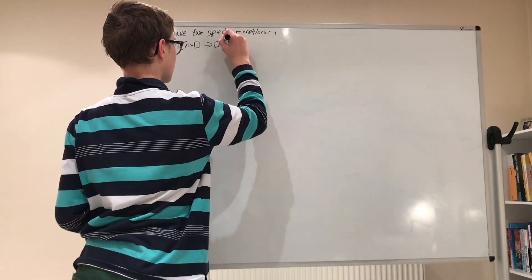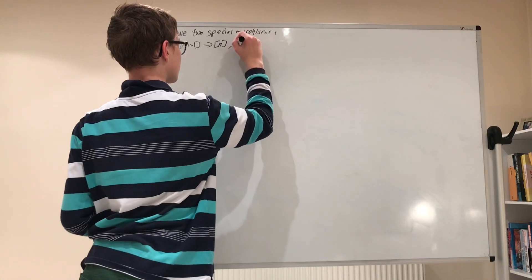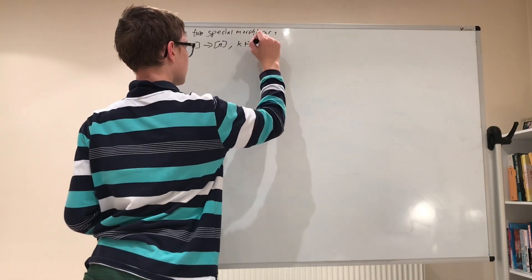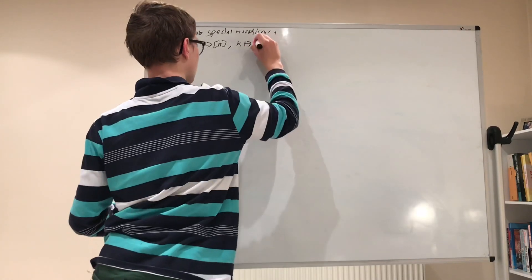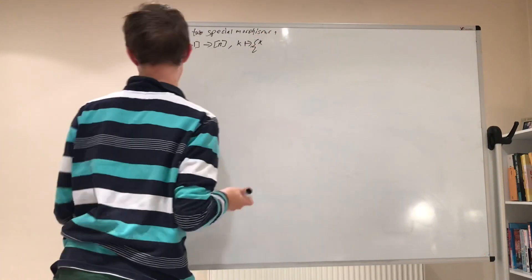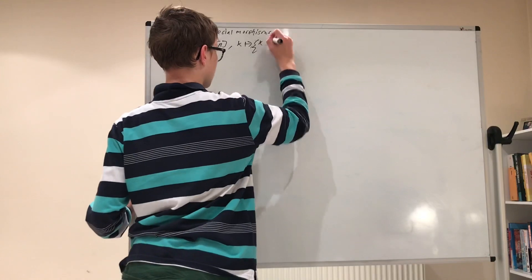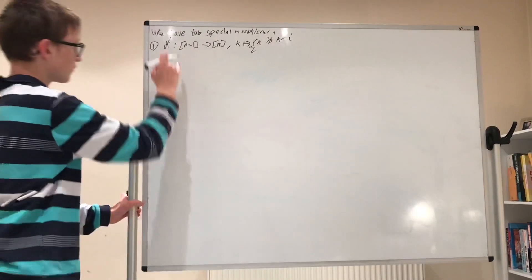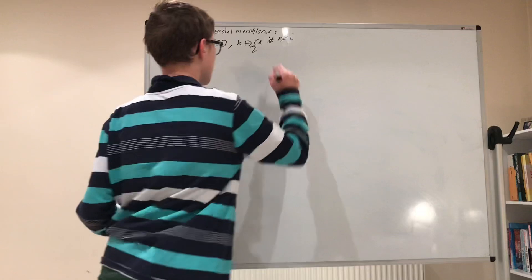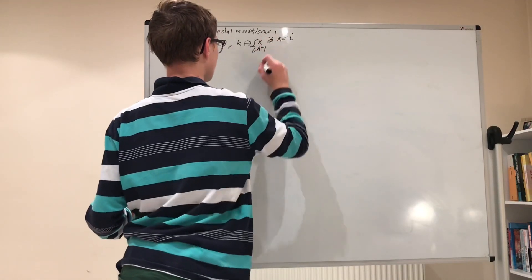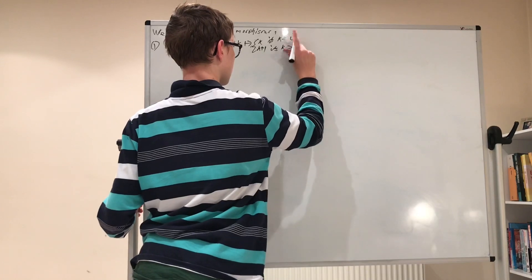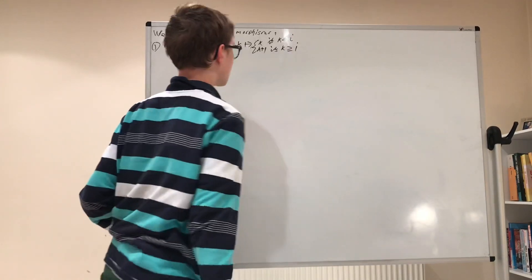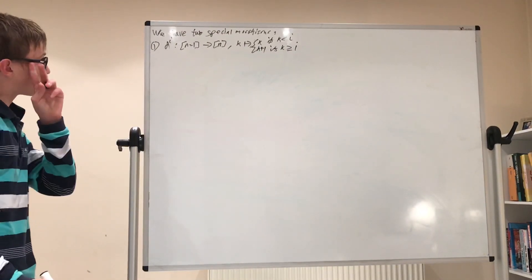Alright. And how it's defined is it maps k to, and actually does it piecewise, so first of all, it just maps k to k if k is less than i, okay? And it maps it to k plus one if k is bigger than or equal to i.